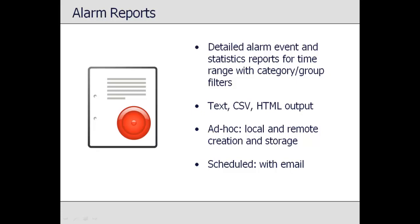Top View's alarm reports contain the details of Top View alarms over a defined range of time. Each report can be filtered to show specific categories of alarms, allowing users to customize each report for the intended audience. Alarm reports can be created on demand — for example in the remote viewer client — or scheduled to execute at specific times. The output of each alarm report is a local file in text, CSV, or HTML format. Scheduled reports can also be emailed to one or more recipients, keeping people informed of overall alarm behavior beyond individual alarm notifications.